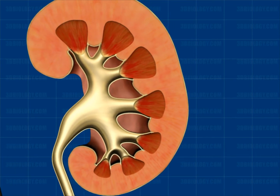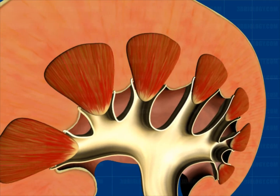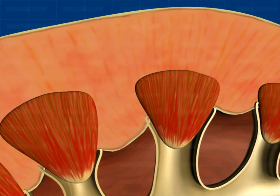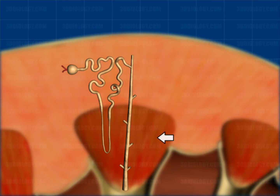A nephron is the functional unit of a kidney. The name comes from the Greek nephros, which stands for kidney. Nephrons are very small filters, and millions are tightly packed together. Part of the nephron is in the cortex of the kidney and part of it is in the medulla. Nephrons are about four centimeters long.